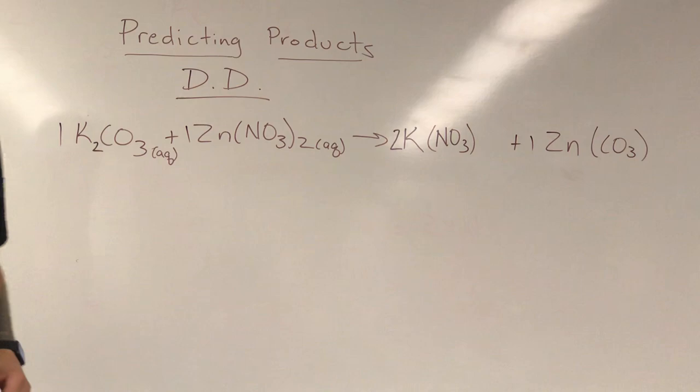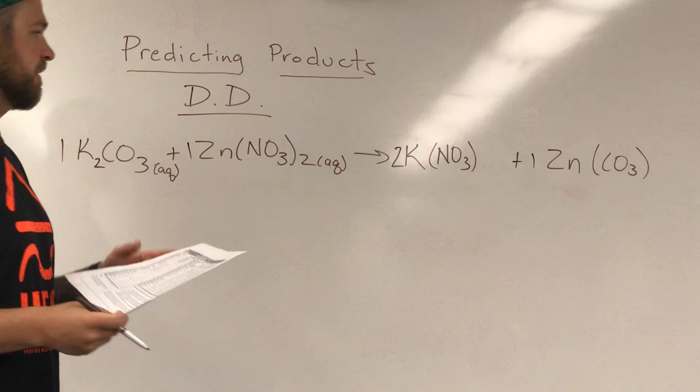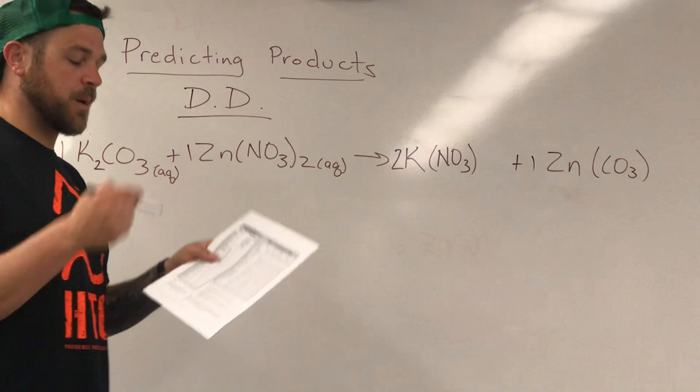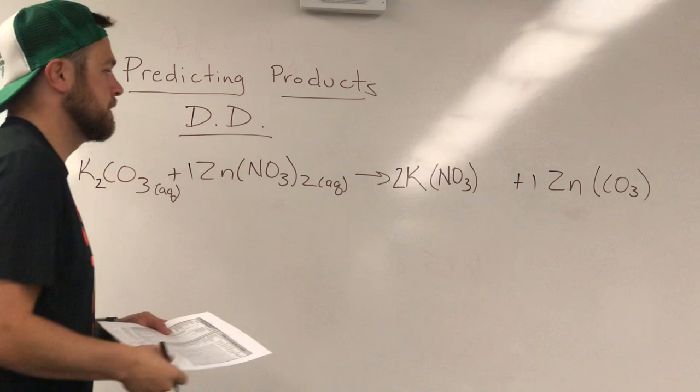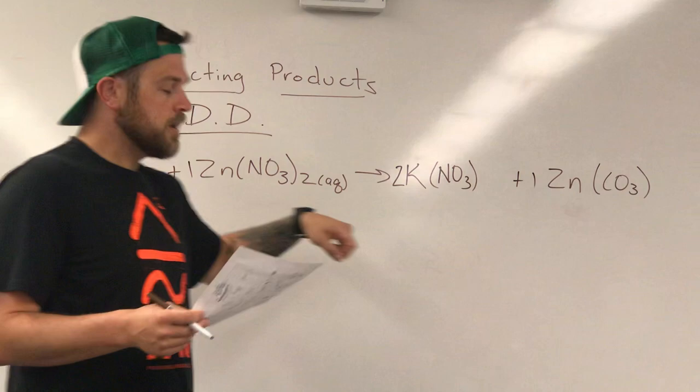Now the most tricky part about double displacement is in fact the rules, the solubility rules that are on here. So what I have to do is I know that one of these two has to form a solid. And remember, a solid on our solubility rules either says I for insoluble will not dissolve, or it says SS, which means slightly soluble, which means it kind of dissolves, it kind of doesn't. So I need to look up these two things.